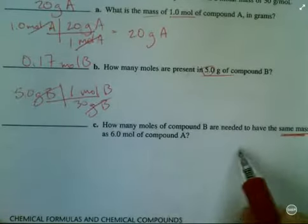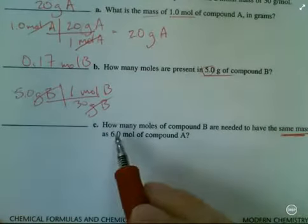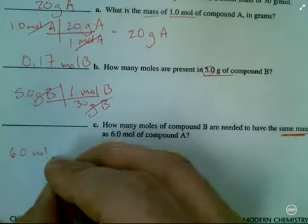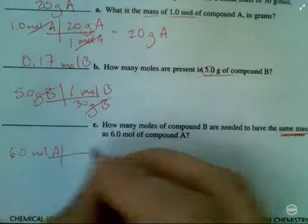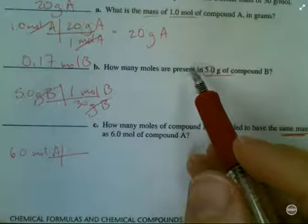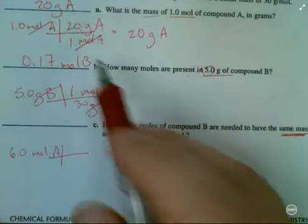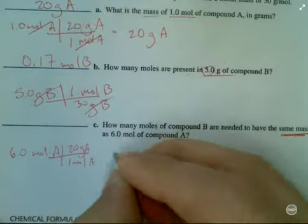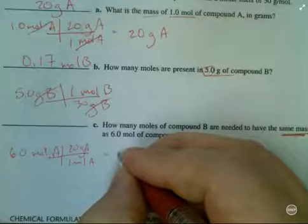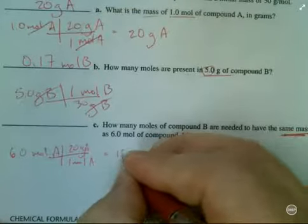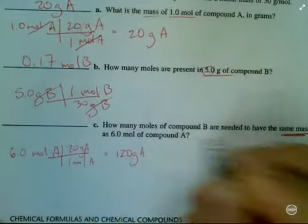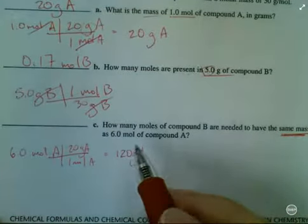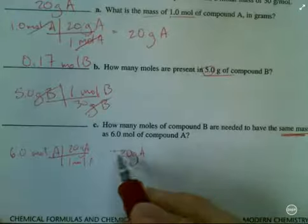Same mass as 6 moles of compound A. Well, in order to know what that mass is, I'm going to calculate what the mass of 6.0 moles of A are, using the molar mass of 20 grams per mole, 20 grams A per 1 mole of A. That's going to give me 120 grams. And so 6 moles of A has a mass of 120 grams.